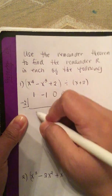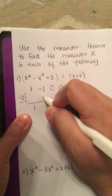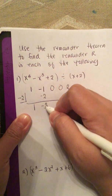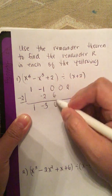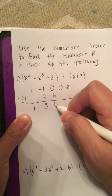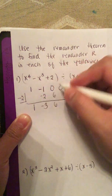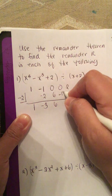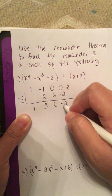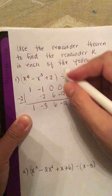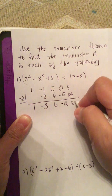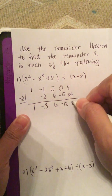We bring down the 1. 1 times negative 2 is negative 2, so negative 1 plus negative 2 gives minus 3. Then minus 3 times negative 2 is 6. So 0 plus 6 is 6. Then 6 times negative 2 is negative 12. Then 0 minus 12 is minus 12. And minus 12 times negative 2 is positive 24. And 2 plus 24 is 26, so this is the remainder.